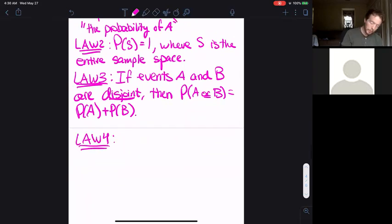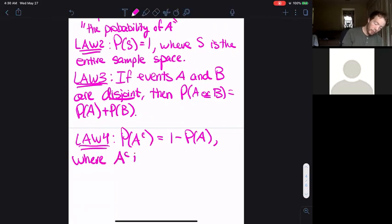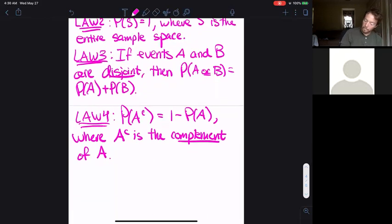Law 4: The probability of the complement of A is equal to one minus the probability of A.